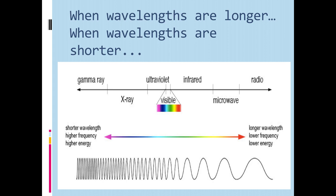Now they've flipped it — radio is on the right, gamma on the left, but the information is still very important. Moving from right to left you have radio, microwave, infrared, and in between infrared and ultraviolet you have visible light — with ROYGBIV in full effect: red, orange, yellow, green, blue, indigo, violet. From right to left: longer wavelength, lower frequency, lower energy going into violet, which has shorter wavelength, higher frequency, higher energy. Then continuing on that bar, you have x-ray and gamma. We just added the visible spectrum in there.